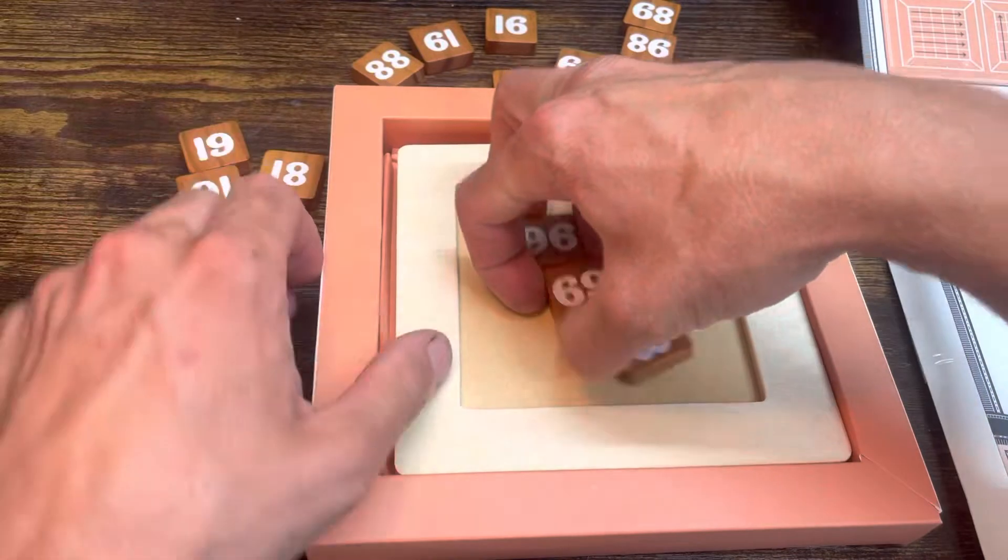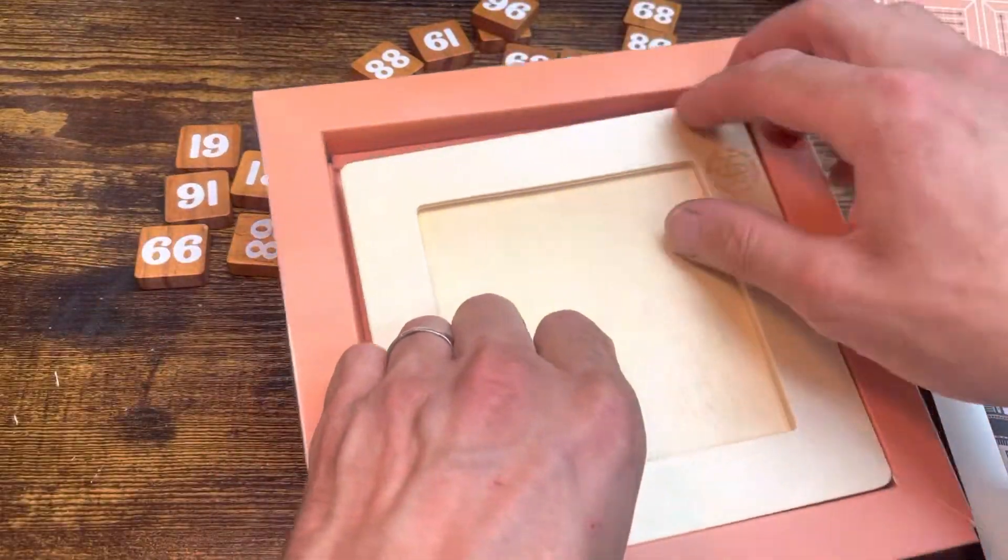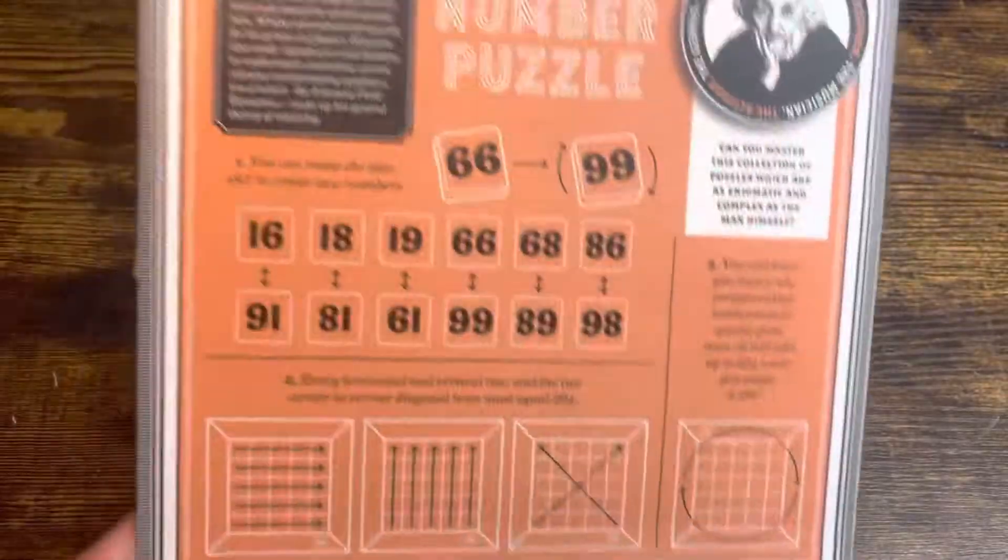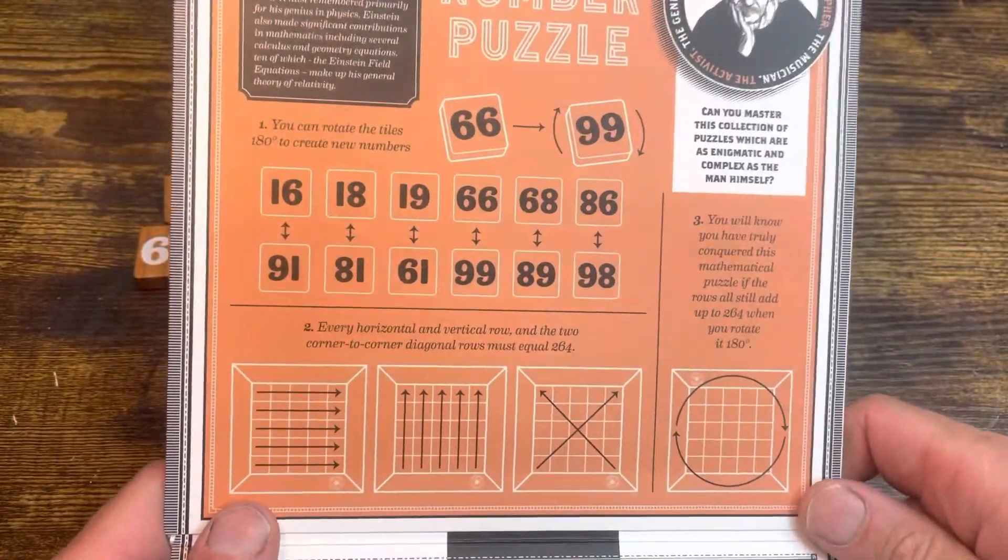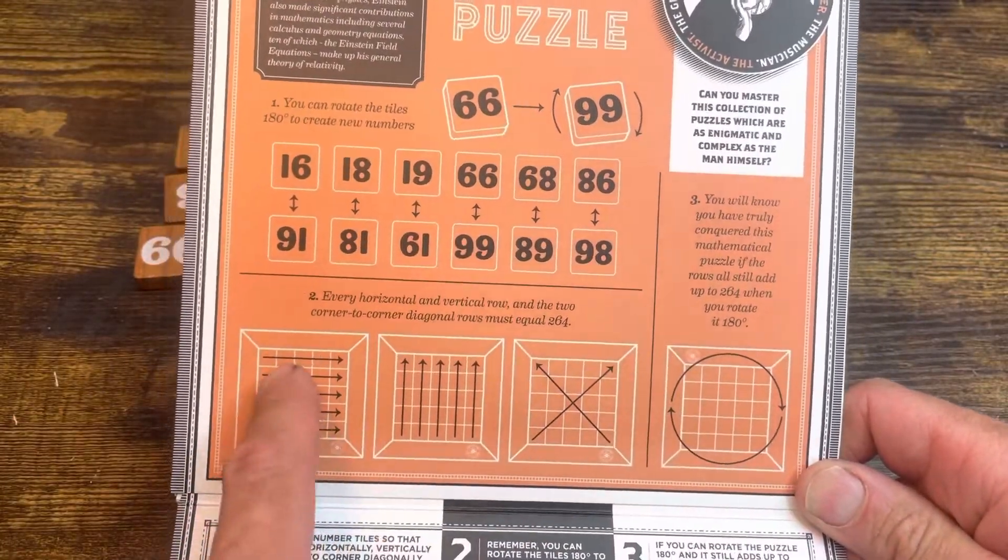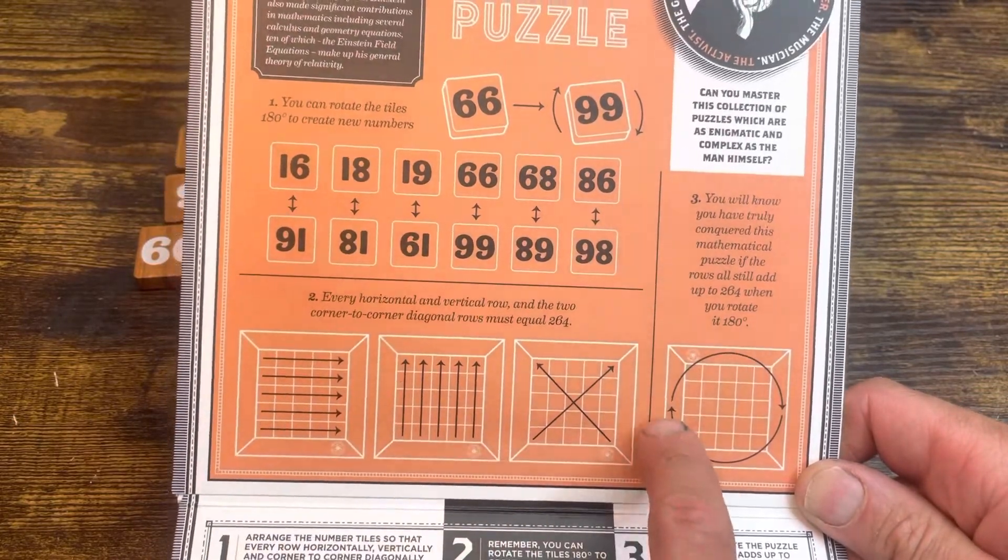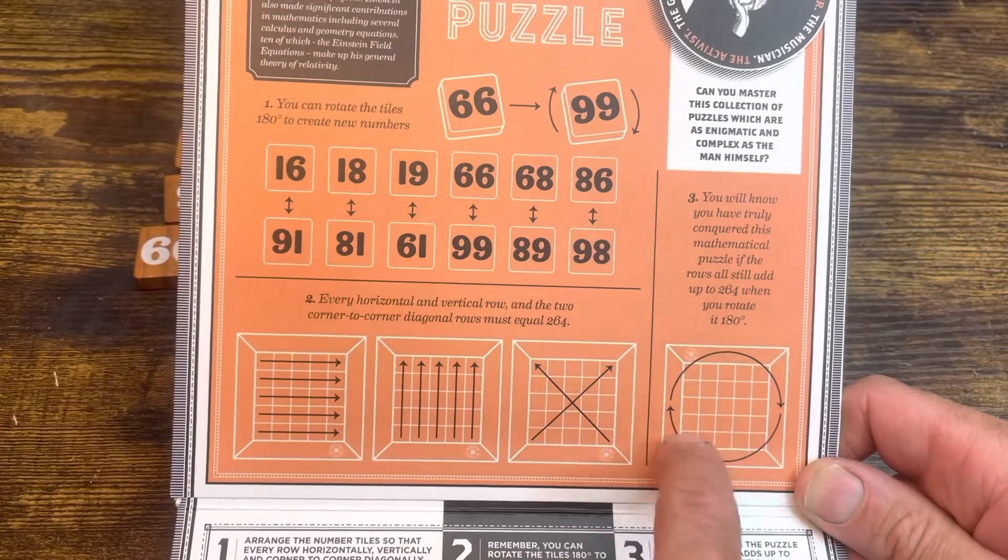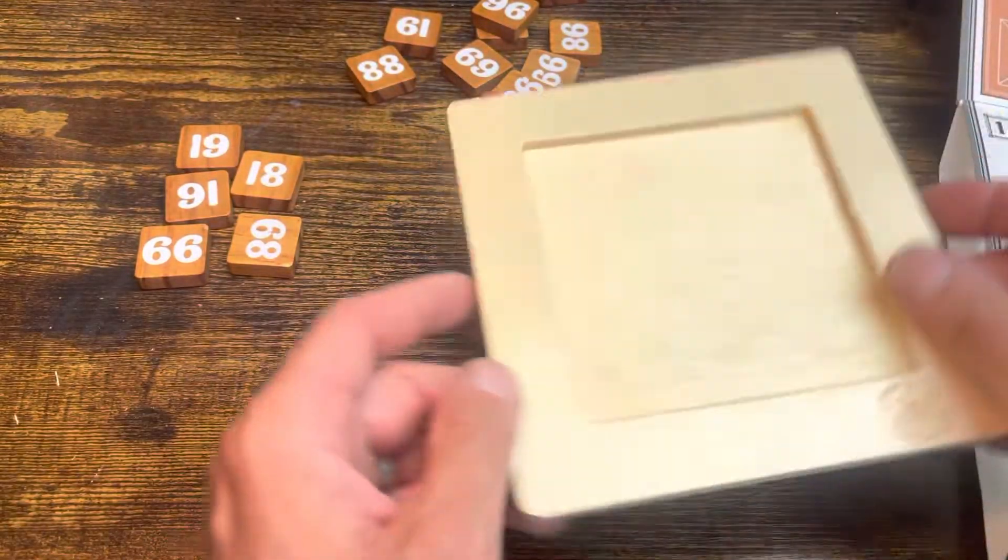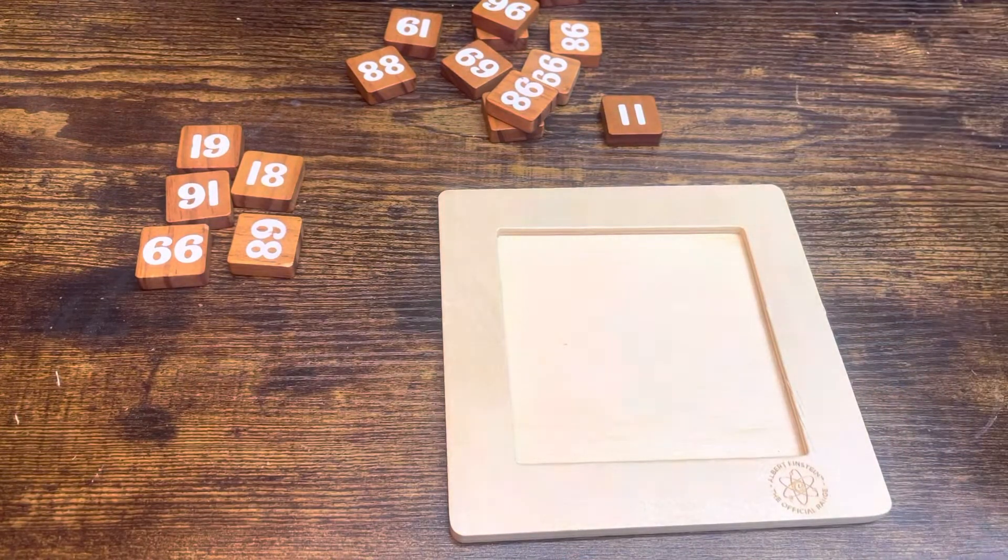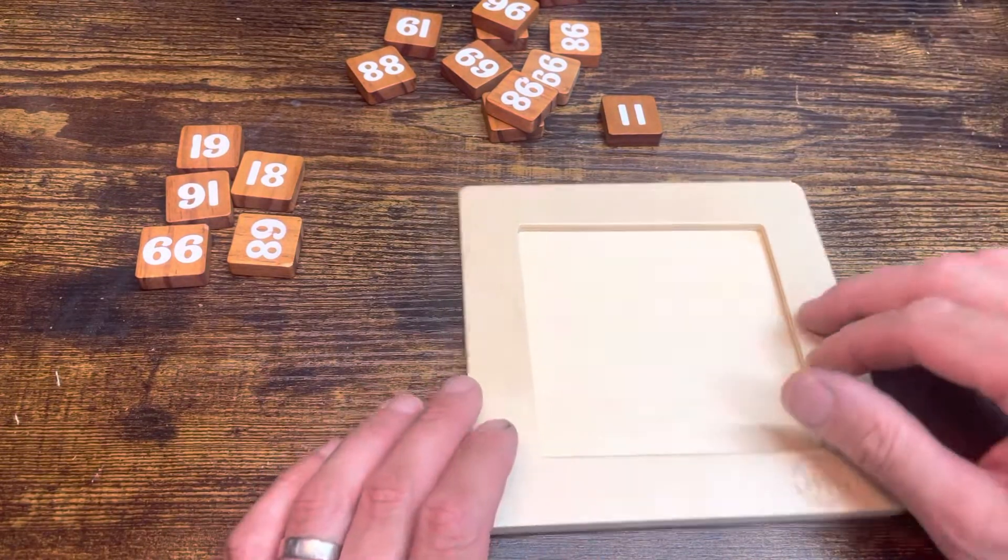Now the first thing I'd like to say is that actually the clue, as you may or may not have realized, is in the description on how to do it. They're giving it away here because immediately with this in mind, especially this bit, the rotating of it, we know that the tiles are going to have to be in some sort of a pattern on the actual board to get the 264 in all directions.